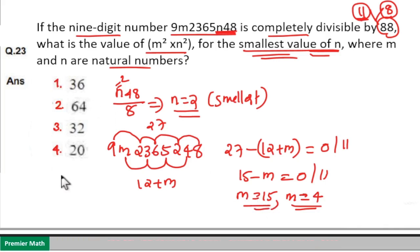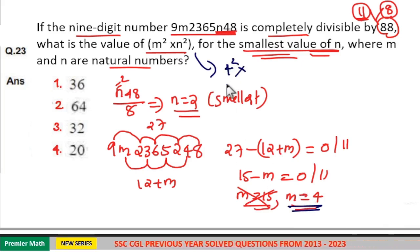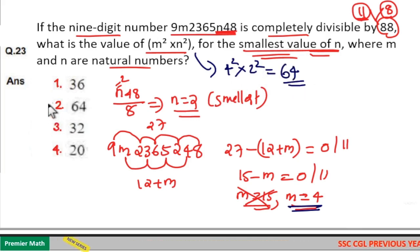Now if you look at the options, the options are smaller values. 15 squared itself is 225. So for m squared times n squared, I will take m value as 4. m squared times n squared equals 4 squared times 2 squared. 4 squared times 2 squared equals 16 times 4, 64. So option 2 is your answer.